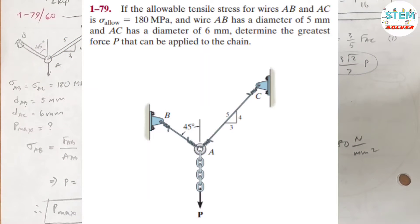If the allowable tensile stress for wires AB and AC is equal to 180 MPa, and wire AB has a diameter of 5 mm and AC has a diameter of 6 mm, determine the force P that can be applied to the chain.